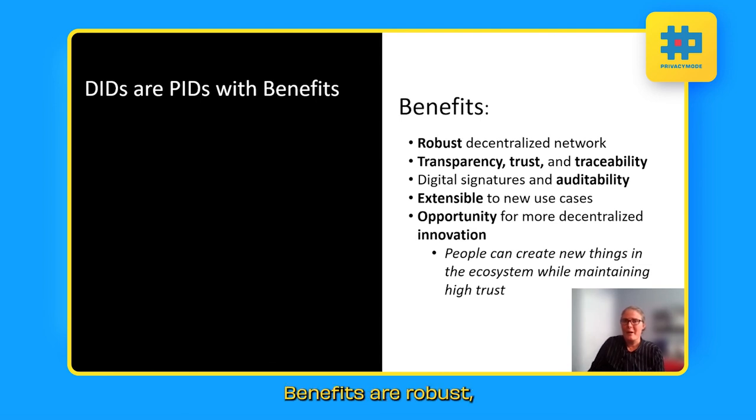Benefits are robust decentralized network, transparency, trust and traceability. Everything is digitally signed. So this means that we have the possibilities for auditability, very flexible. All the components can be remixed, extensible to new use cases, and ultimately an opportunity for more decentralized innovation.